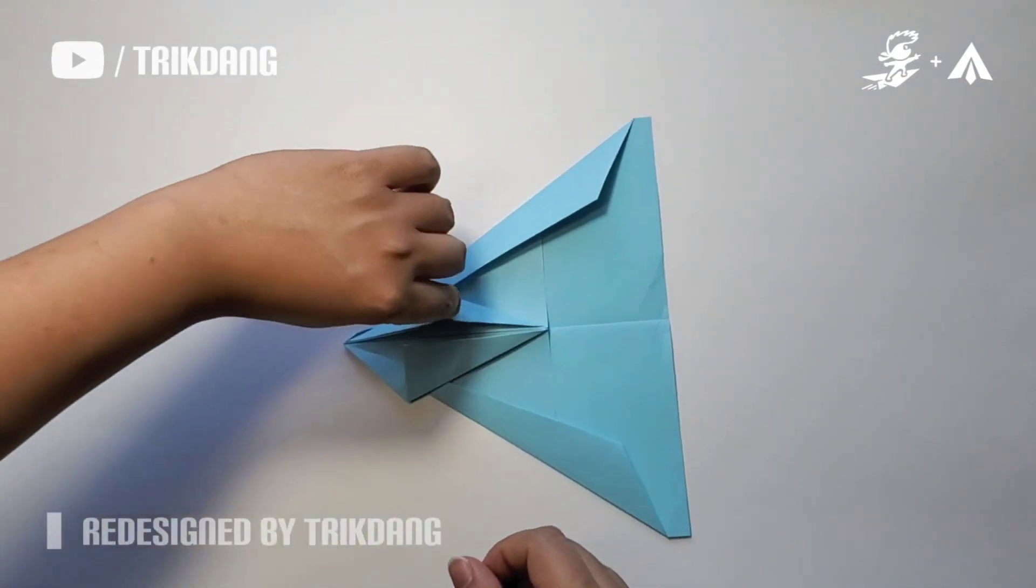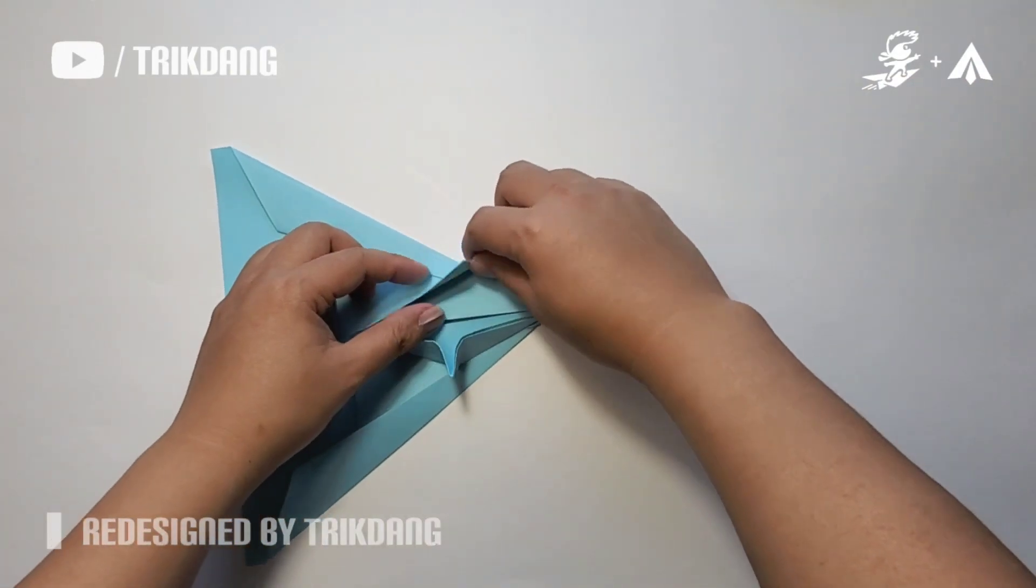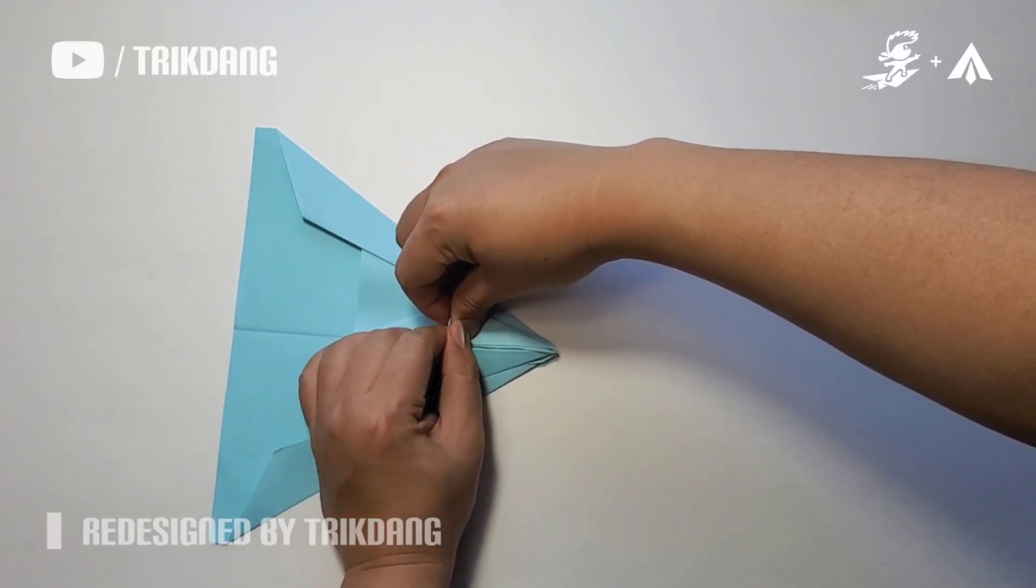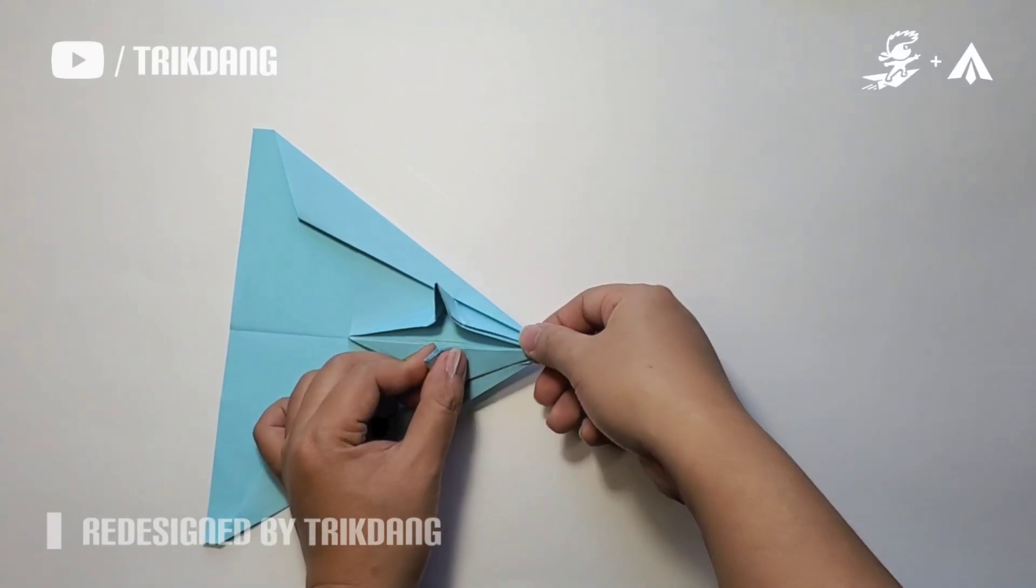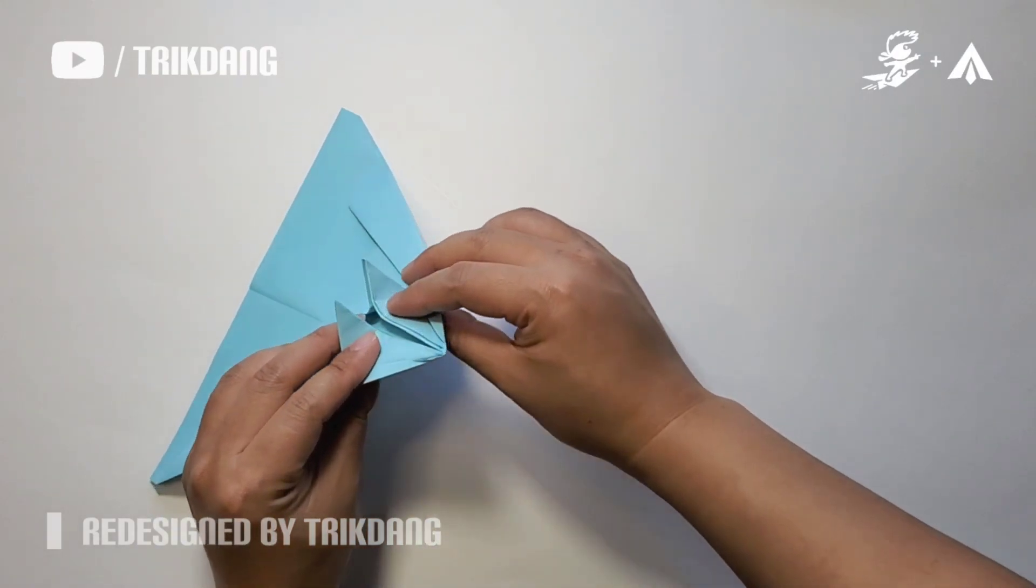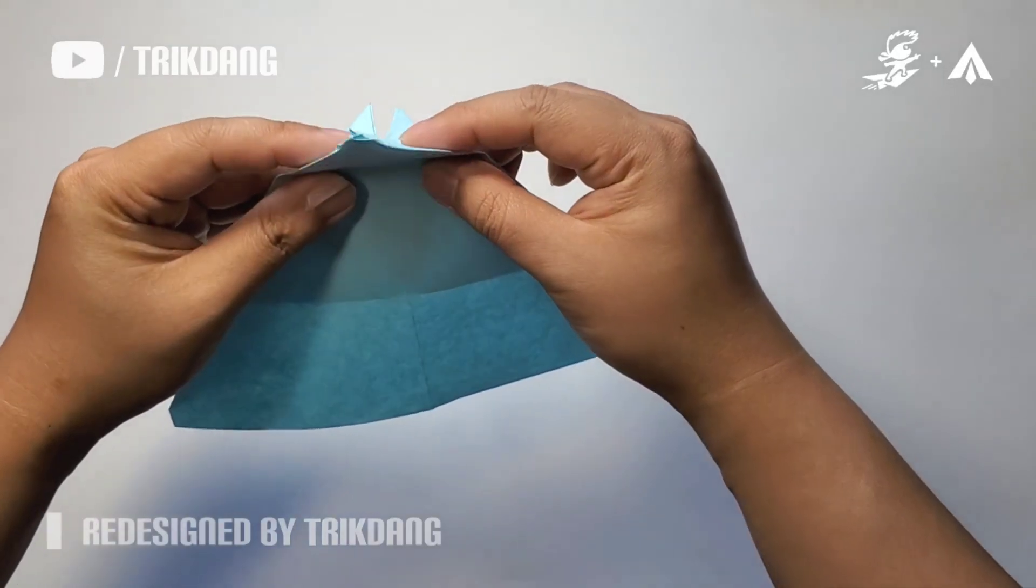So I have this here. Turn the paper this way, and then repeat the same fold. Press it down. On the following step, let's hold the paper up and fold this part of the paper down.